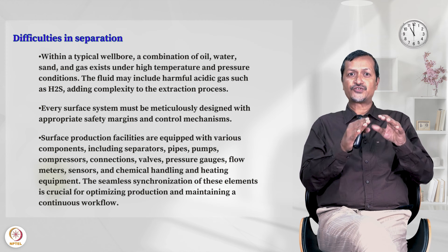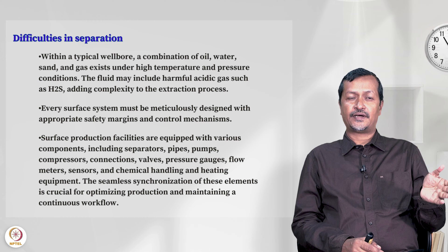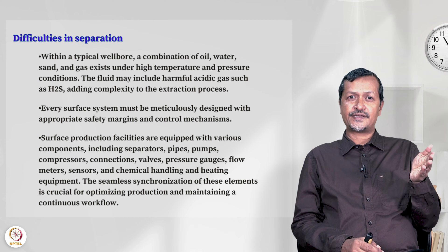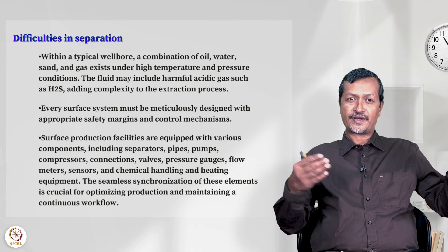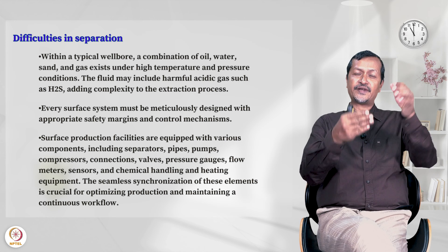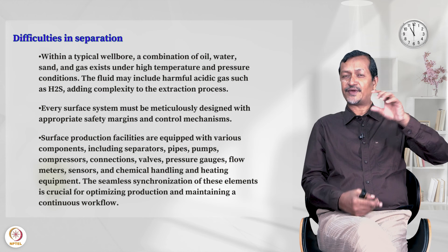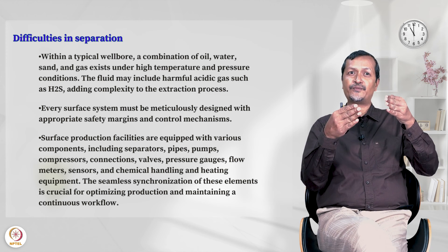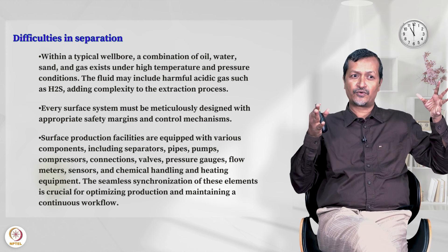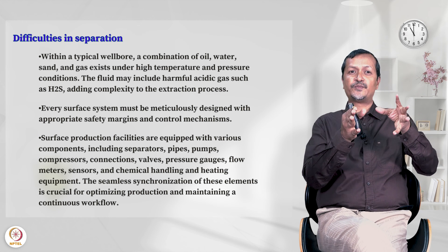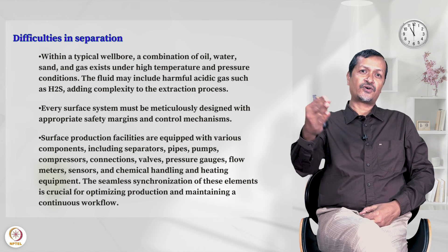Why are so many pieces of equipment required? Let us say one wellbore is producing at very high pressure, like 500 bar, and another is producing at 10 bar, and you are connecting all wellbores together. The 500 bar fluid will be entering into the 10 bar pressure wellbore. So you cannot connect them directly — you must have a certain mechanism so that the high-pressure and low-pressure fluids mingle and pass to a common separator. From there you will again be separating gas and oil.